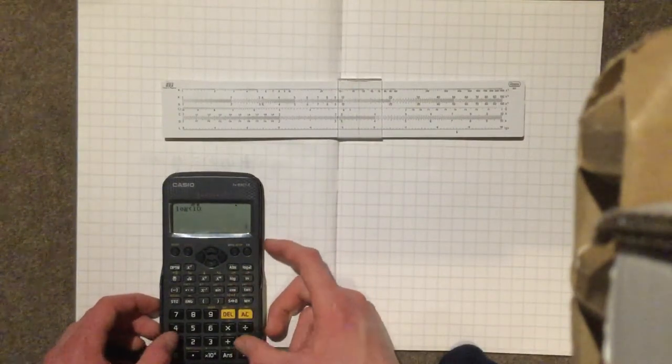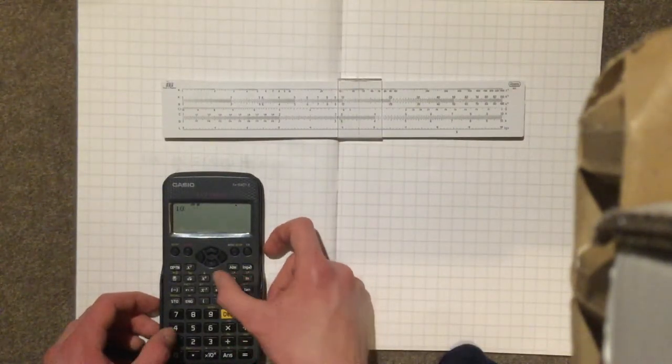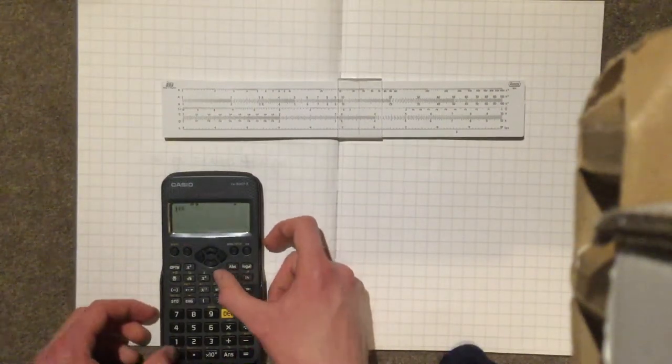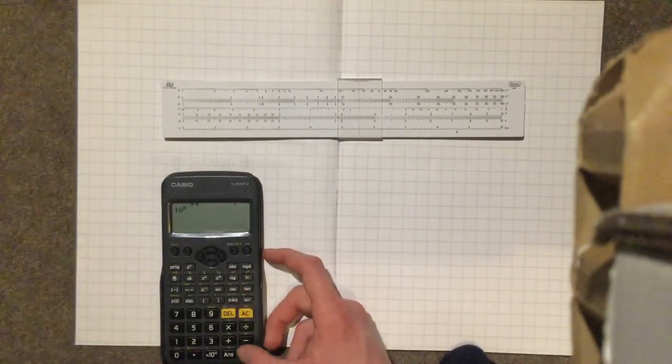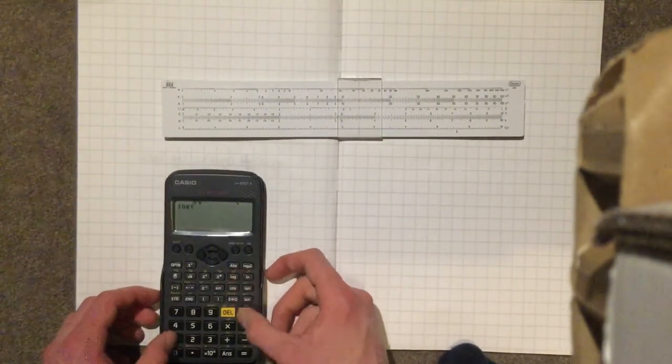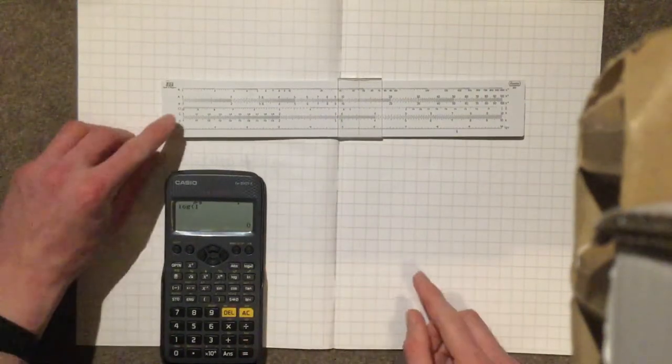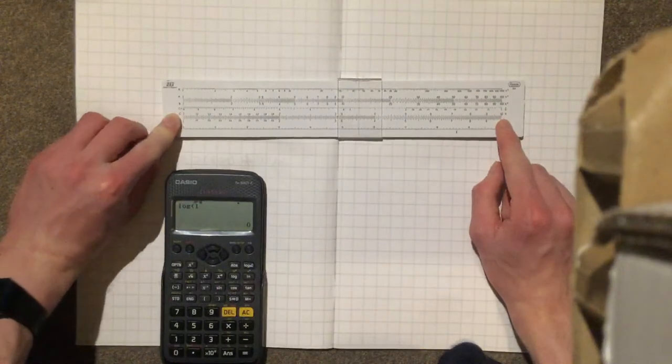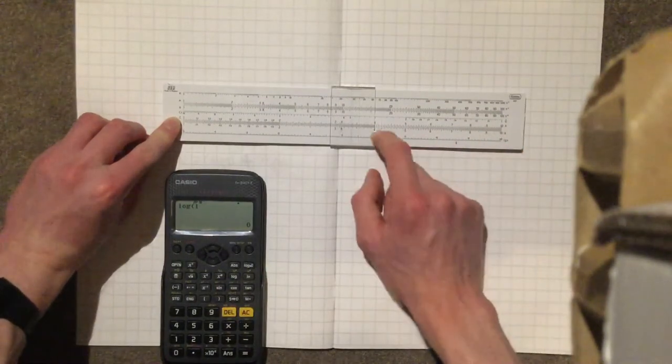Log of 10 is 1, because 10 to the power of 1 is 10. And 10 to the 0th power, anything to the power of 0 is 1. And, sure enough, the log of 1 is 0. So if 1 is 0, and 10 is 1, all of the other numbers are somewhere in between.